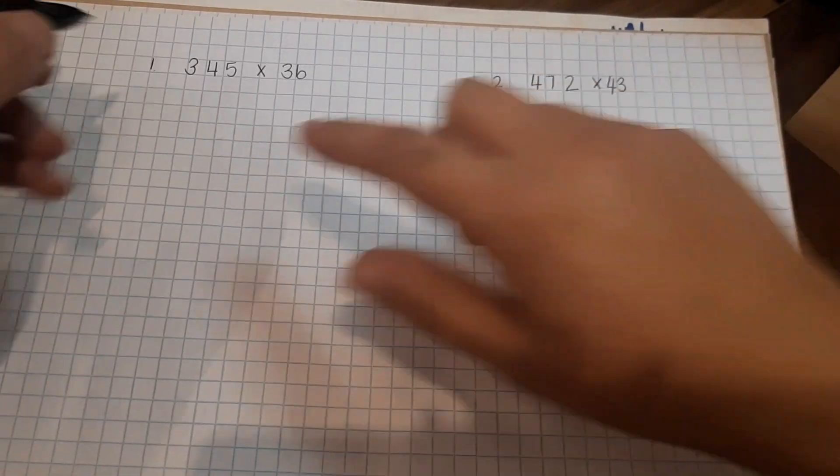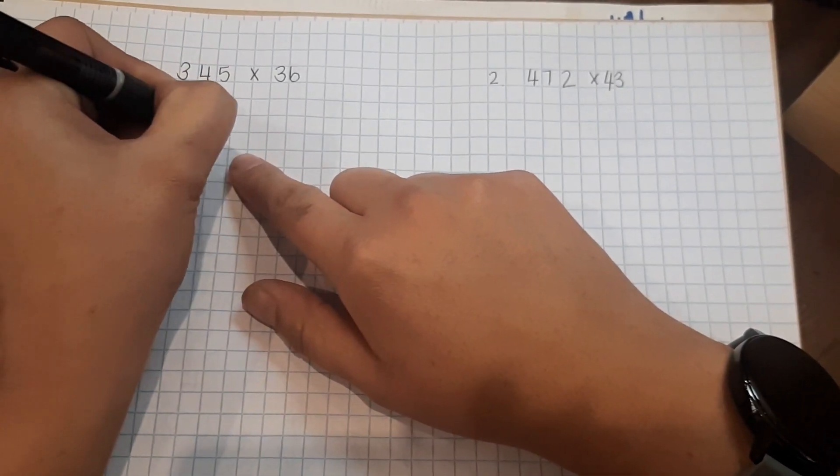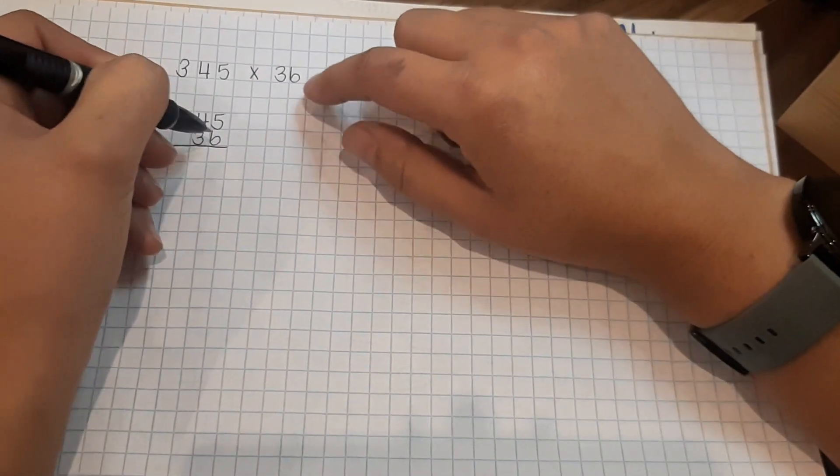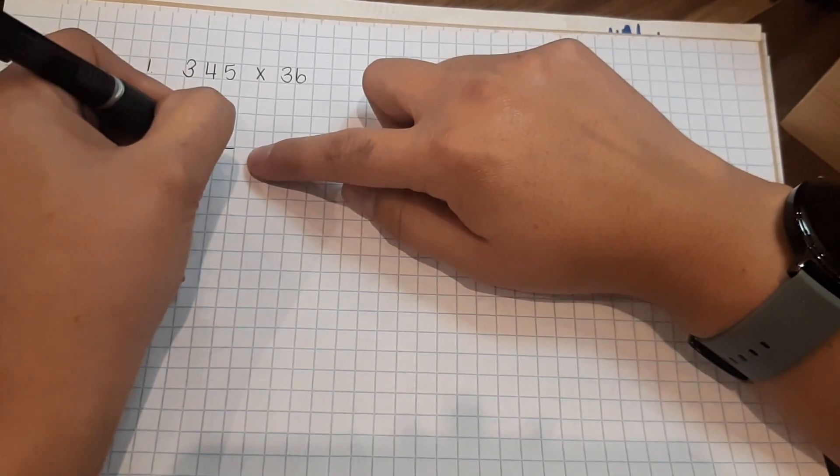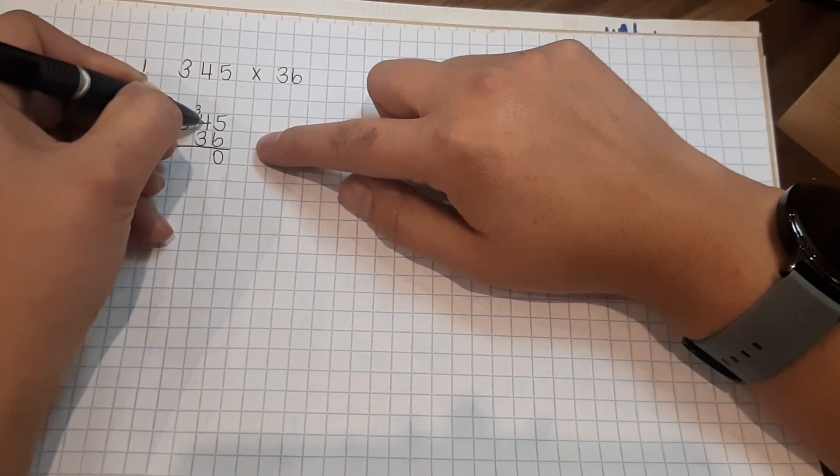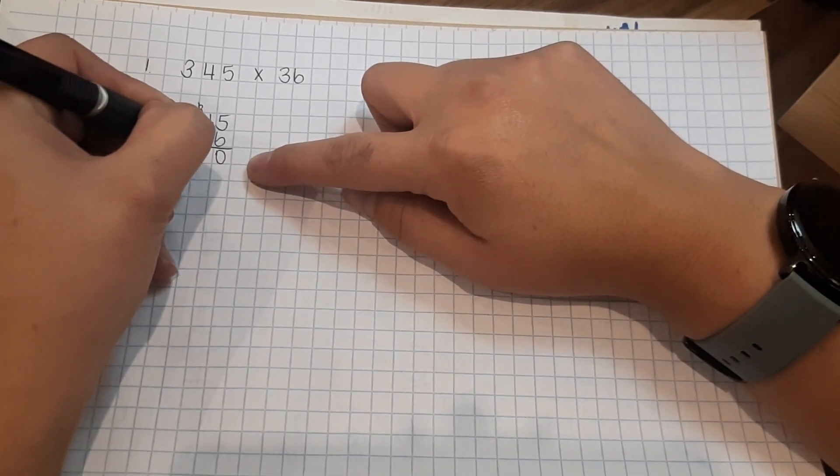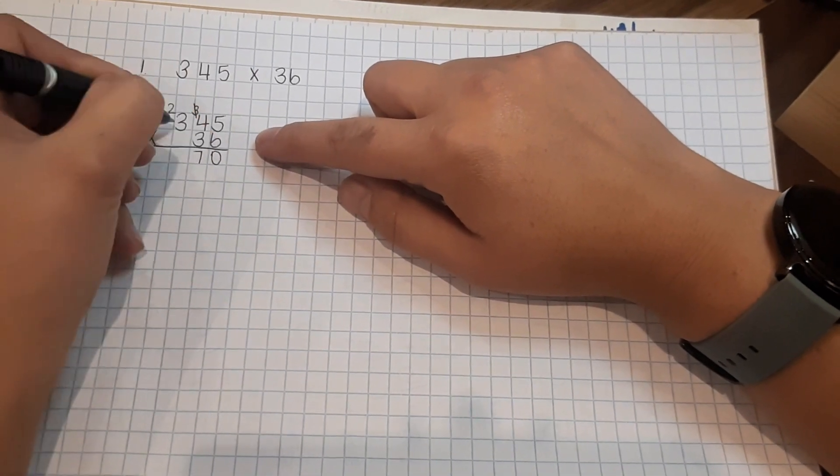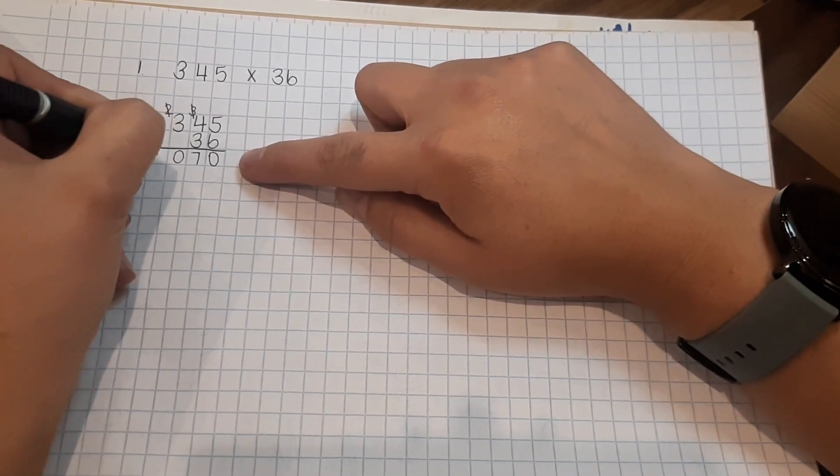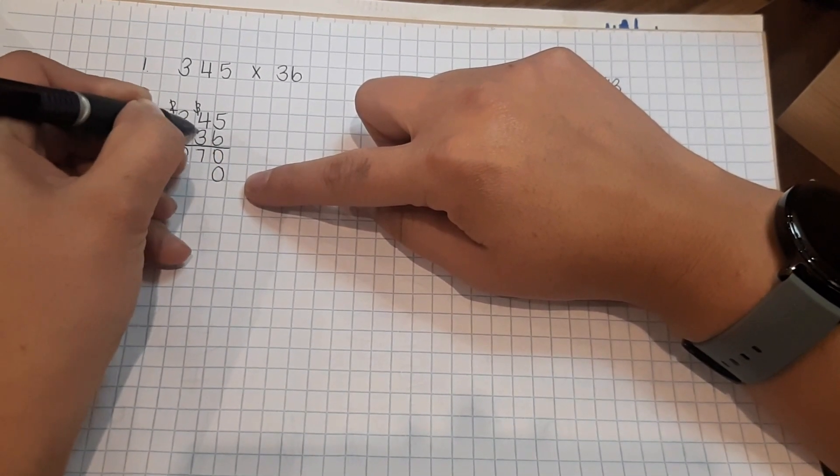345 multiplied by 36. We start at the back with the units. 6 times 5 is 30. Write the 0, carry over the 3. 6 times 4 is 24 plus 3 is 27. 6 times 3 is 18 plus 2 is 20.